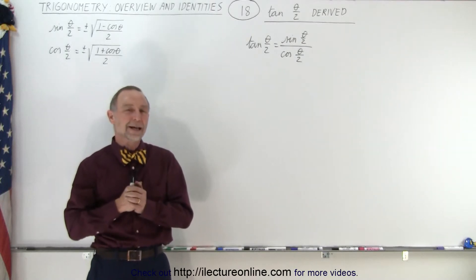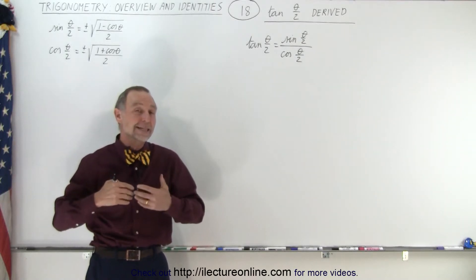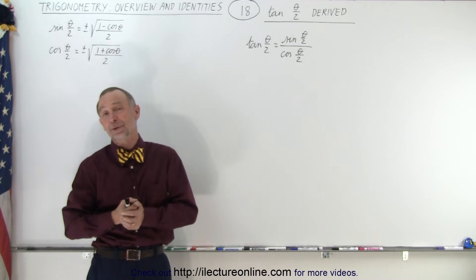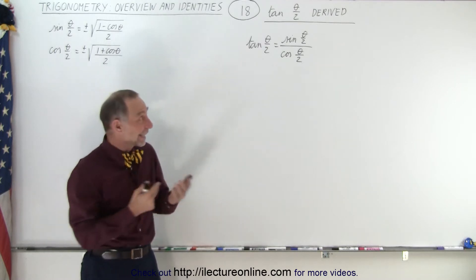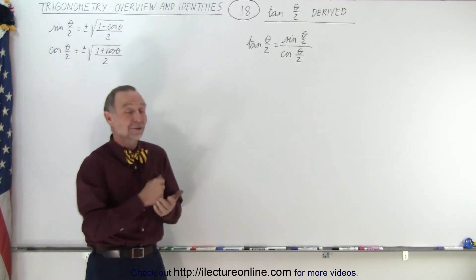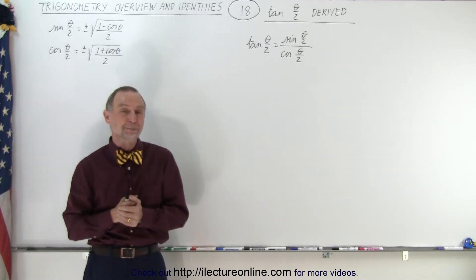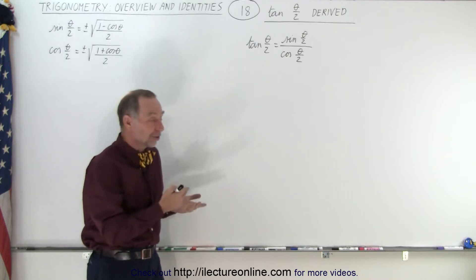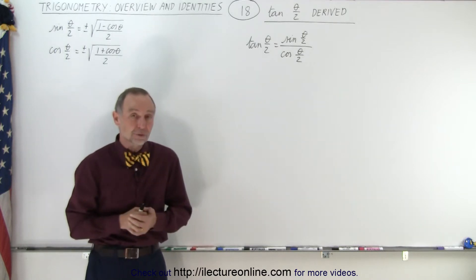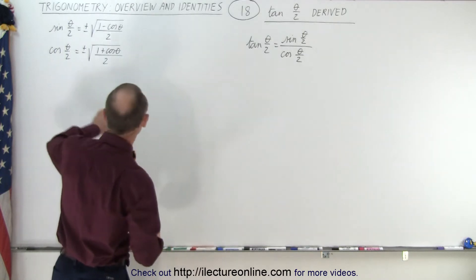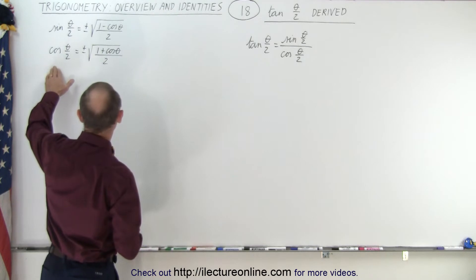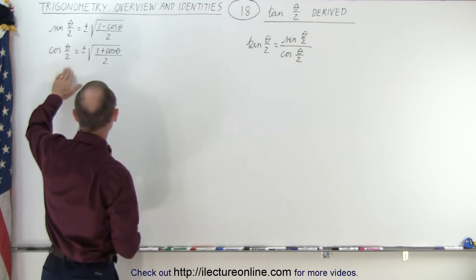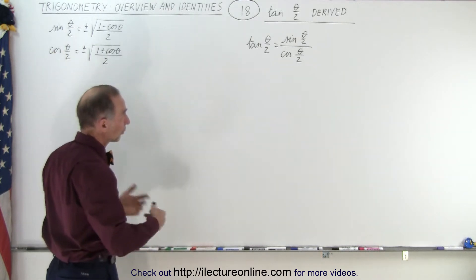Welcome to our lecture online. Let's derive the identity for the tangent of a half angle. We're going to use the relationship that the tangent is the sine over the cosine. From the previous videos, we found the solutions for the sine of a half angle and the cosine of a half angle.